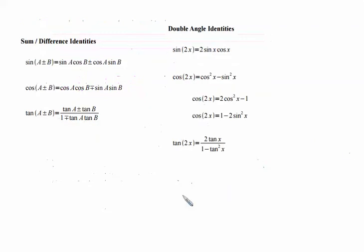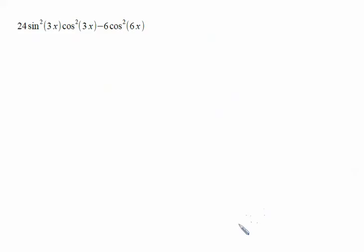Typically, it's going to be this list of identities, as we said: the sum and difference identities or the double angle identities. Let's scroll into our second example. Now, this one looks a little bit more sophisticated, but it's still going to rely on those same identities we were looking at.